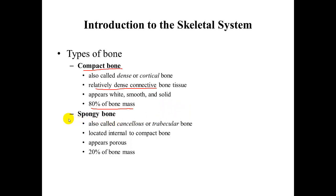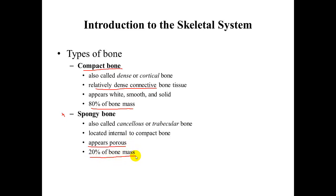We also have spongy bone, located internally or deep to the compact bone. It appears porous, is where we find bone marrow, and makes up approximately 20% of bone mass.